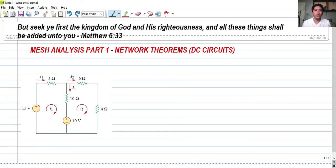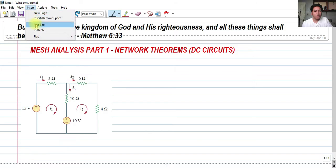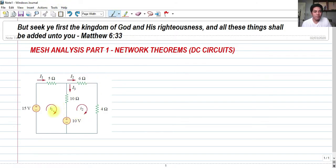So first of all, how do we write the mesh equations? For this example, we have two meshes with I sub 1 and I sub 2. As you can see, they are in the clockwise direction. Mesh analysis is basically just like KVL.